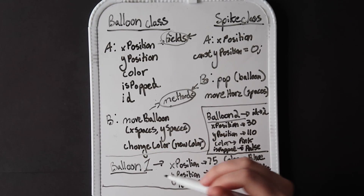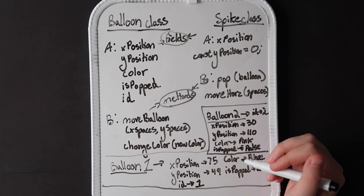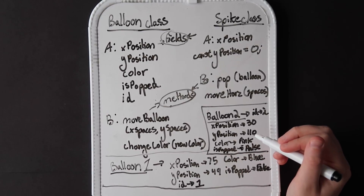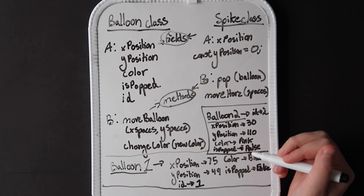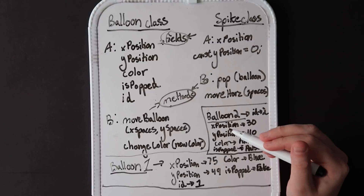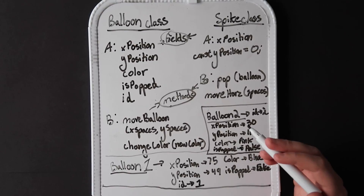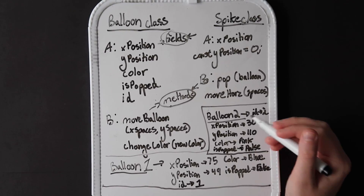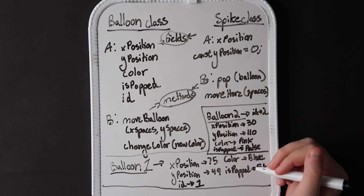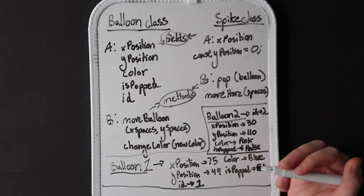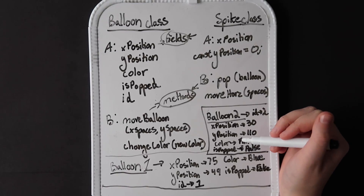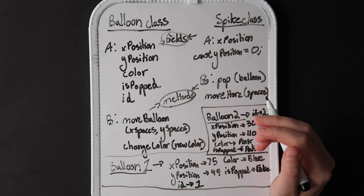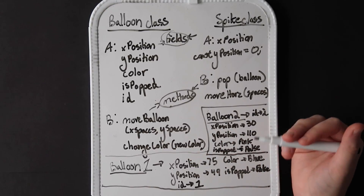It's important to remember that balloon one and balloon two are completely independent of each other. If I change the X position of balloon one, it will not affect balloon two, and vice versa. These instances of the balloon class are created from that class blueprint. Everything we see belongs to an object in code — the is popped field belongs to every instance of the balloon class, and the pop balloon method belongs to every spike instance because it's defined in the spike class blueprint. Our pseudocode is organized around these objects and data rather than the actions and logic themselves.